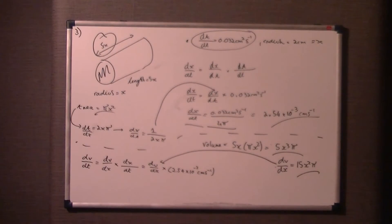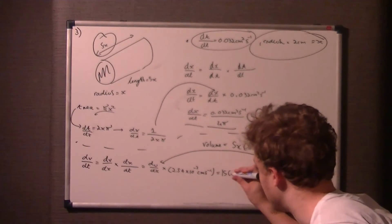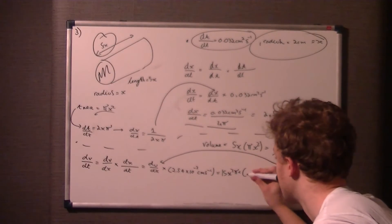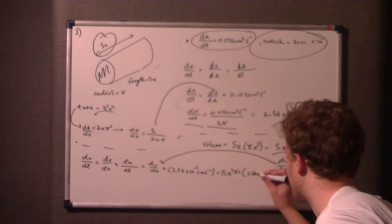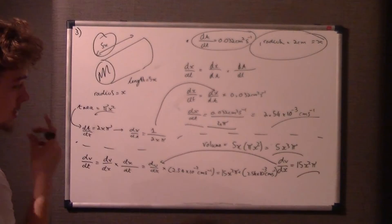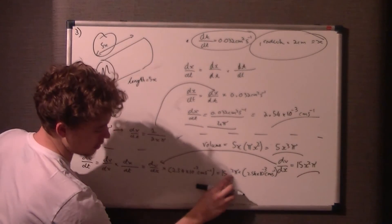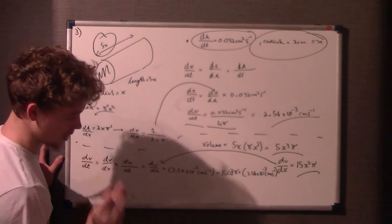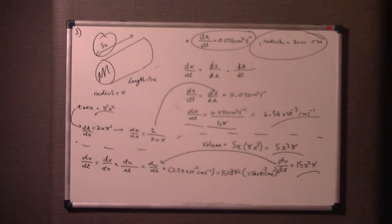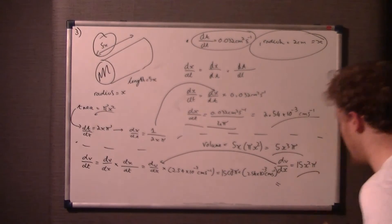So we just sub this dv/dx into this over here. Now we're told we've got to find it when x is 2. It's the same principle. The radius is the same as what it was before. What we need to work out here is, first of all, you can do this two ways. Just sub this into 15x²π times the 2.54 times 10 to the minus 3 centimeters per second. And then what we're going to do is just sub in x to be 2. Now you could have just done it there straight away. So just where x was, we just sub in 2. So it's 15 times 2² times π times 2.54 times 10 to the minus 3 centimeters per second.